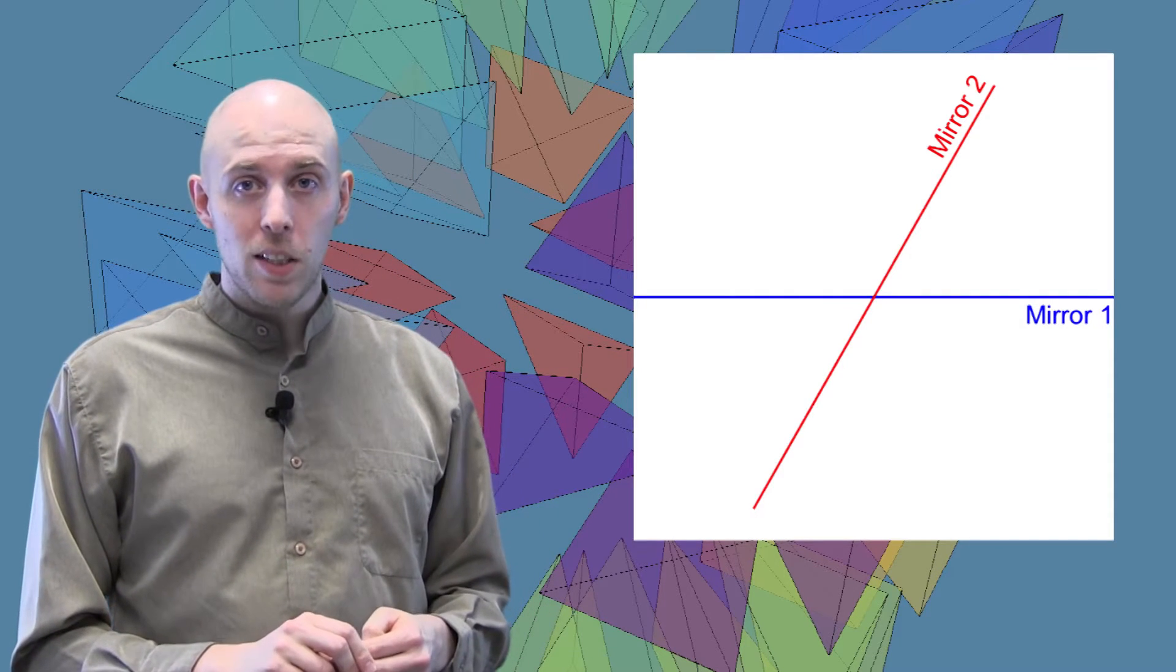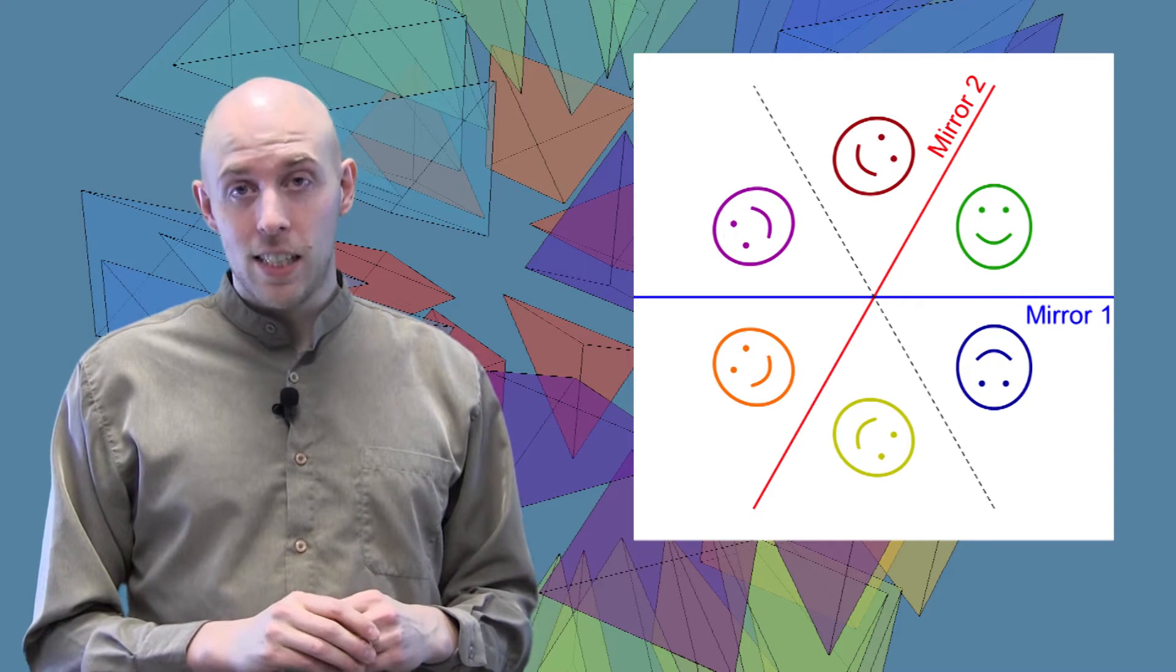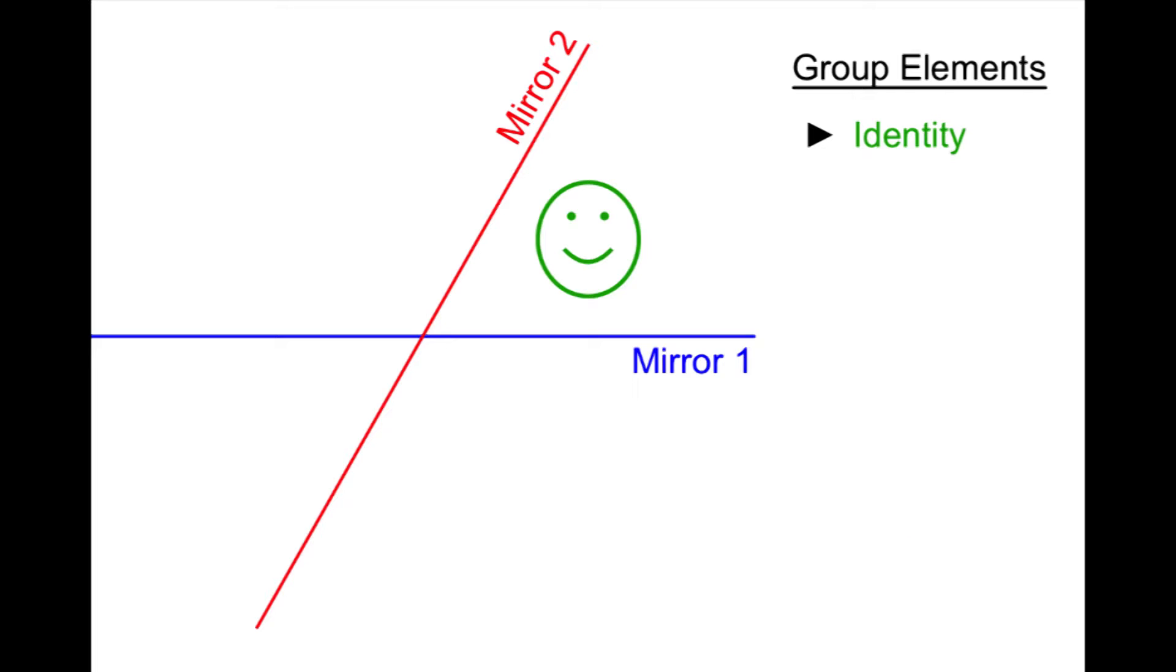For example, in two dimensions, if we place two one-dimensional mirrors at an angle of 60 degrees to each other, then our group consists of six elements, while a sequence of zero reflections corresponds to the identity element. Sequences of one reflection include flipping over the first mirror and flipping over the second mirror.